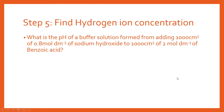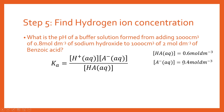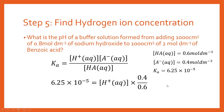We now have our two relevant concentrations for the Ka expression. Substituting into Ka = [H⁺][A⁻] / [HA]: we know [HA] = 0.6 mol/dm³ and [A⁻] = 0.4 mol/dm³, and we look up the Ka value for benzoic acid from a data table. Substituting all of this in and rearranging gives us the hydrogen ion concentration [H⁺].